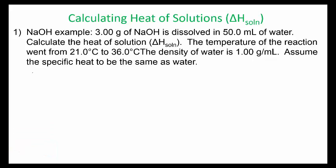So that's an overview. We have 3.00 grams of NaOH dissolved in 50 milliliters of water. It says calculate the heat of solution. The temperature of the reaction went from 21 to 36. The density of water is 1.00 gram per milliliter, and it says assume the specific heat to be the same as water.